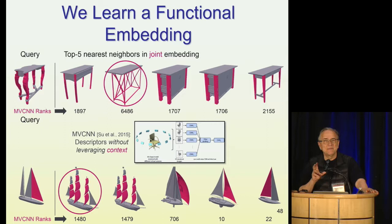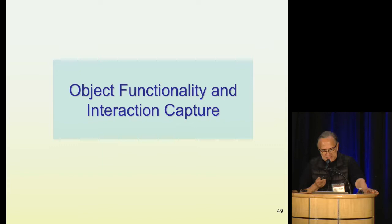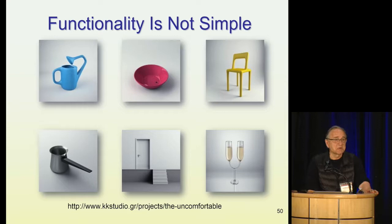The semantic similarity reflects the function of the objects, which is my main topic. Capturing function is tricky. Here I show some examples of shapes that look perfectly normal locally, but actually they're not functional — there's a fundamental flaw in their design. To understand functionality, you must be able to understand why the shapes are wrong.